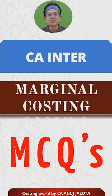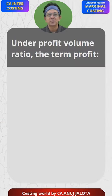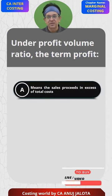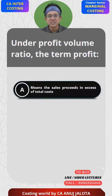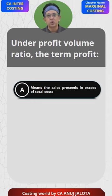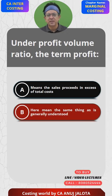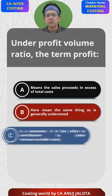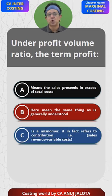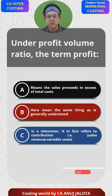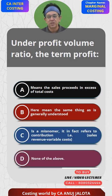CA Inter Marginal Costing MCQs. Under profit volume ratio, the term profit means sale proceeds in excess of total contribution. Second option: it means the same thing as generally understood, meaning profit. Third option: it is a misnomer — it refers to the contribution, that is sales revenue less variable cost. And option D: none of the above.